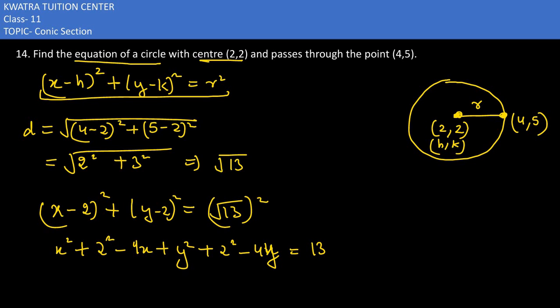Now right hand side, root 13 whole squared - root and square cancel, it would be 13 only. So I have x squared, y squared, minus 4x, minus 4y.